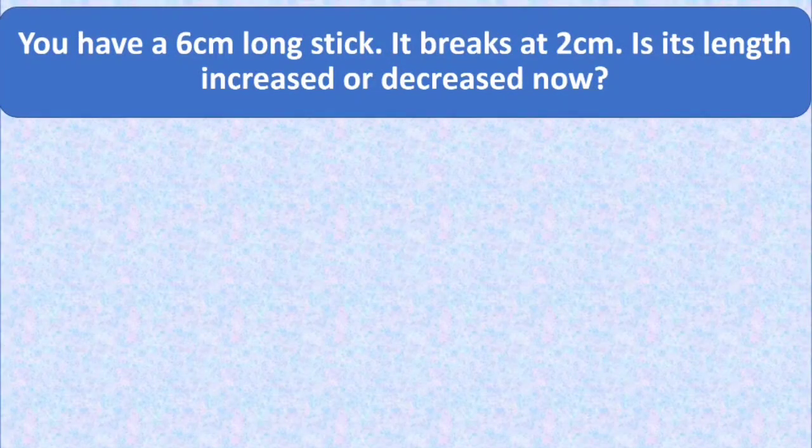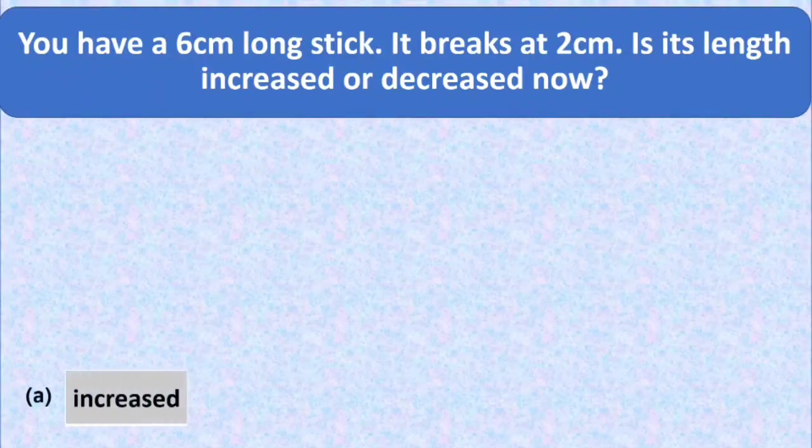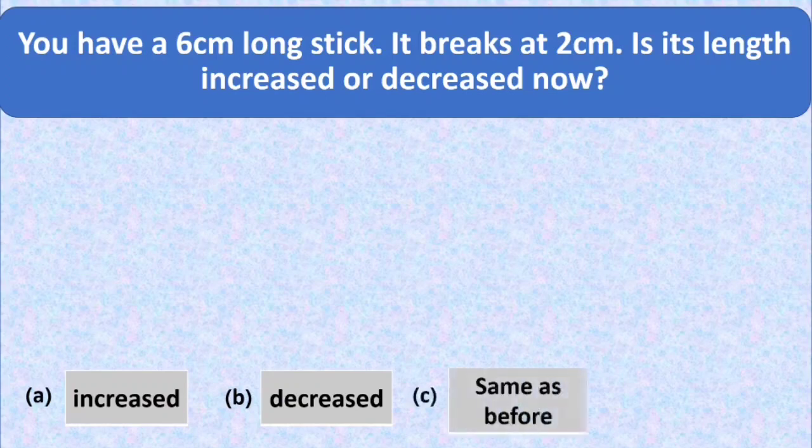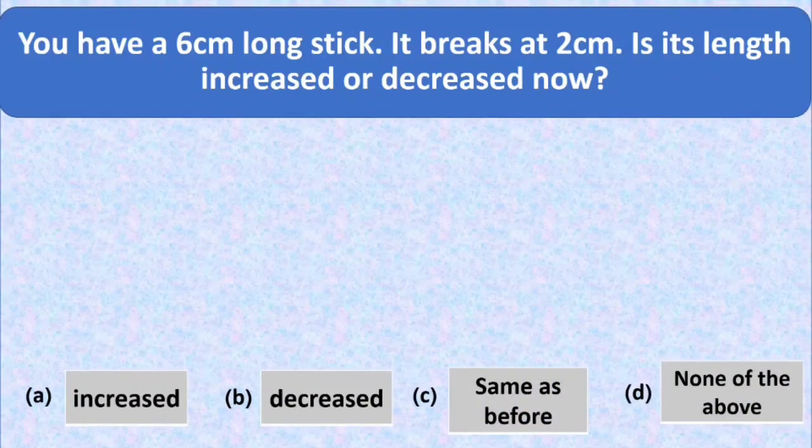Question number three is, you have a 6 cm long stick. It breaks at 2 cm. Is its length increased or decreased now? Here we have four options. Option A is increased. Option B is decreased. Option C is remain same, and option D is none of these.